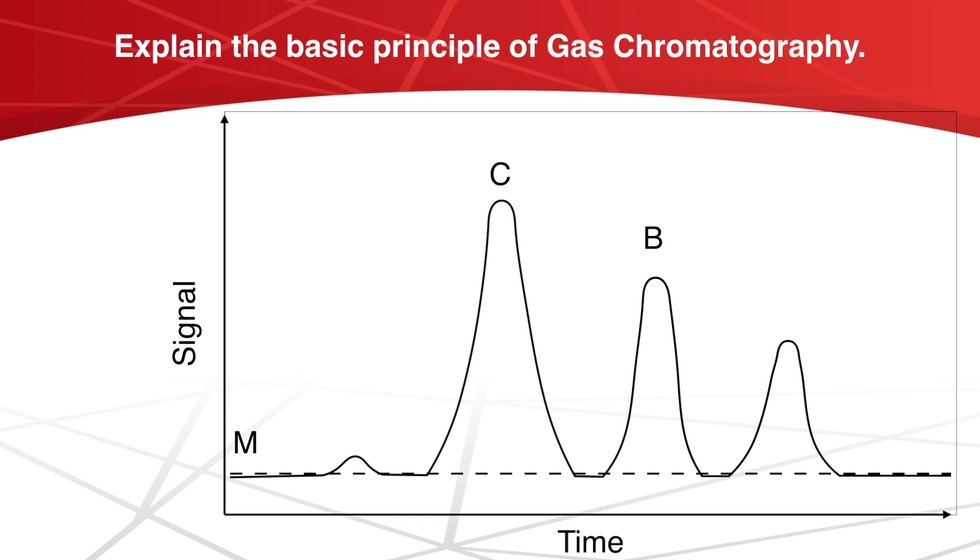In the same manner, B and A emerge one after another and peaks B and A are recorded. The distance from point M to L is the time during which the component C passes through the column. The rate of gas flow through the column being constant, a certain volume of gas would have passed through the column in this time. This time is known as retention time and the volume of gas passed is known as retention volume.